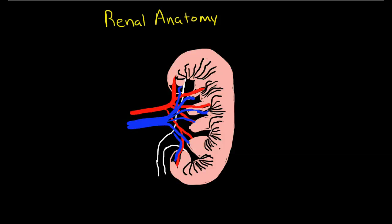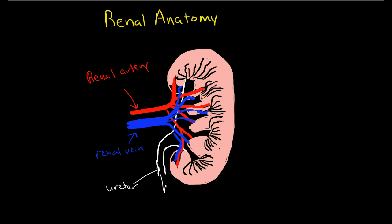Hi, Andrew Wolfe here. In this video I'm going to be talking about a little introduction to, or review of for most of you, the renal anatomy. We have here the renal artery that flows into the kidneys, and coming out from the kidneys is the renal vein. Then we have down here the ureter which brings urine down to the bladder, and draining into the ureter is the renal pelvis which is collecting urine from the collecting ducts.